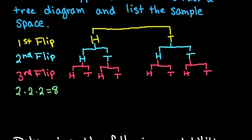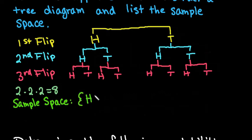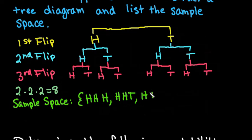Our sample space includes all possibilities. We could have heads-heads-heads, heads-heads-tails, heads-tails-heads, or heads-tails-tails. That gives us all the different orders we can get with heads on the first flip.